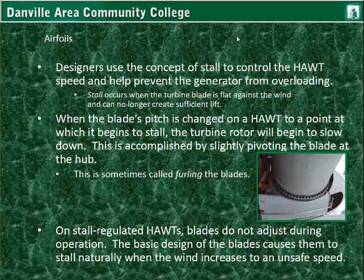Designers use the concept of stall to control horizontal axis wind turbines. This relates to blade pitch for horizontal axis wind turbines, where rotors look like fan or propeller blades. Vertical axis wind turbines usually don't have pitch control — if they do, it's a special or concept design. Stall is used to keep the turbine from over-speeding or over-rotating the generator. Stall occurs when the turbine blade is flat against the wind and can no longer create any lift — it's just blowing against the surface and can't rotate.